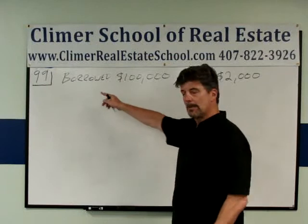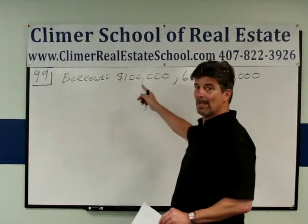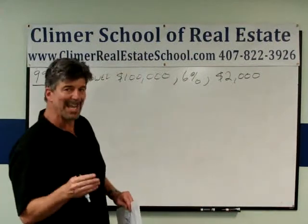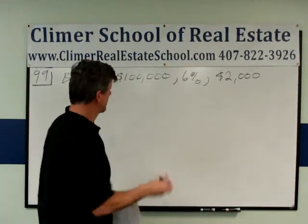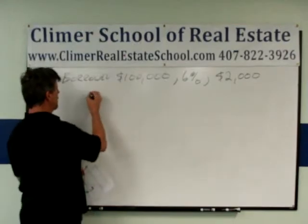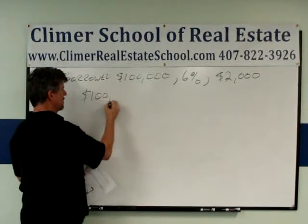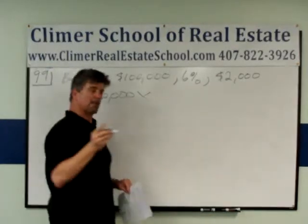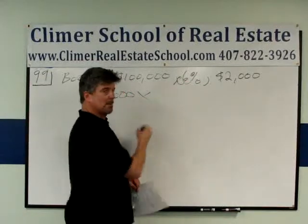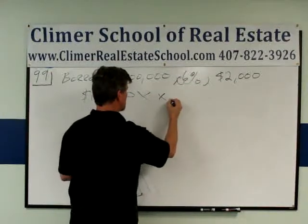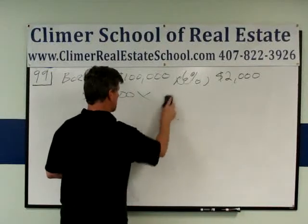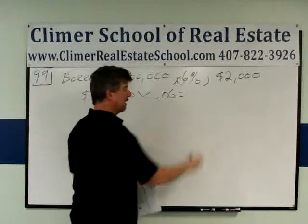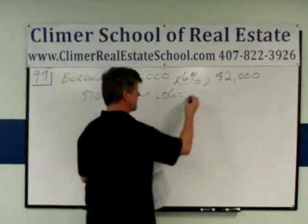First of all, as usual, you've got to write down all the pertinent, relevant information. You've got to do that. We're going to start off with a simple interest calculation. $100,000 times 6% interest per year — I'm going to turn the 6% into a decimal. If you just put that straight into your calculator, that's $6,000.